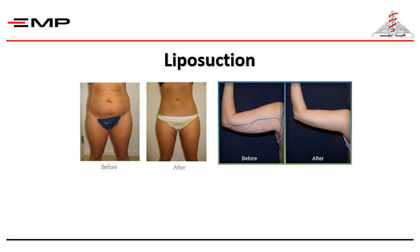Liposuction is one of the most common procedures done in plastic surgery. Here is liposuction from the abdomen and thighs, and this is an example of liposuction from the arms.